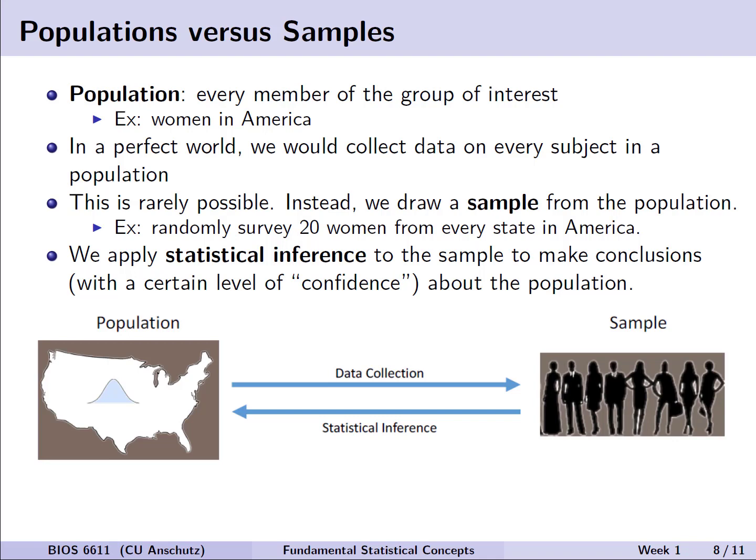We wouldn't even need to make inference because we could decidedly state the exact population mean is this. However, it's not possible in most cases due to various economic and realistic constraints placed on our ability to do and collect this data. We instead have to rely on drawing samples from the population. So instead of identifying every single woman in America and the population and taking a survey or some information from them, we might randomly survey 20 women from each state in America and use that sample of the 20 women from the 50 states to draw some form of statistical inference.